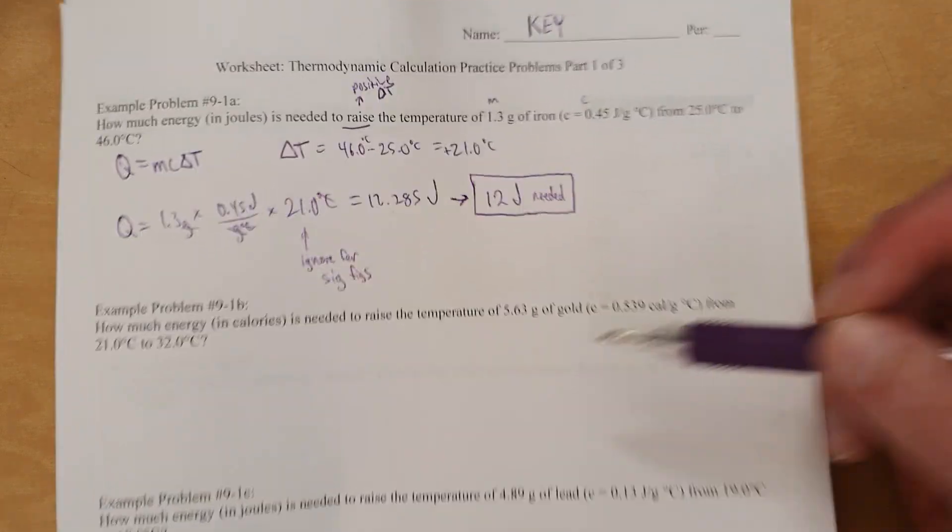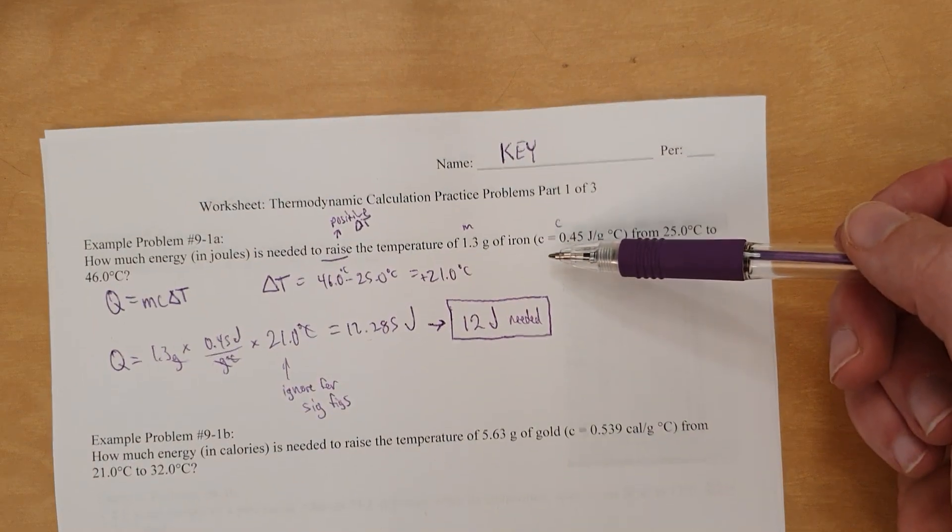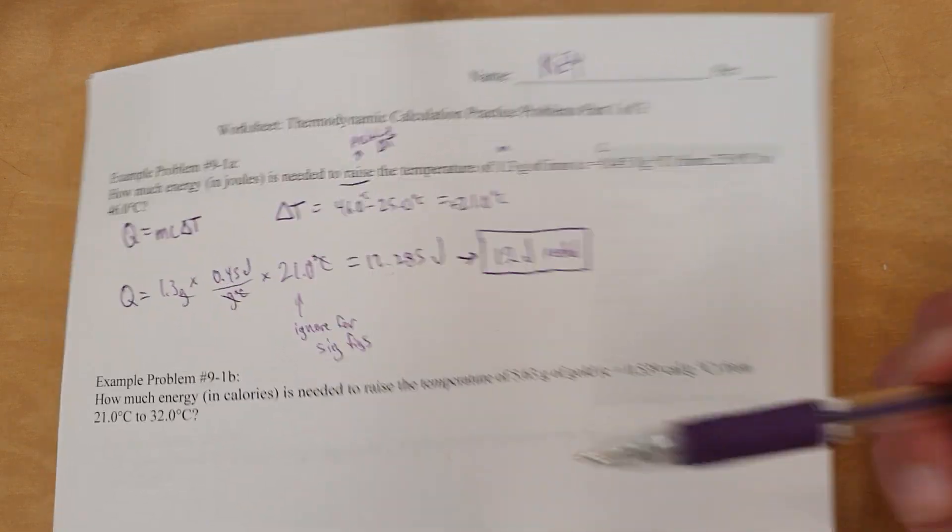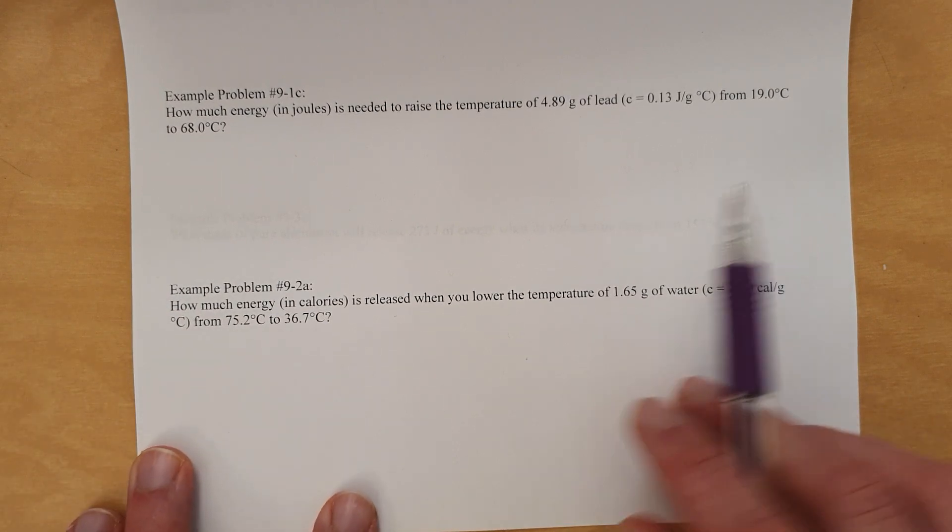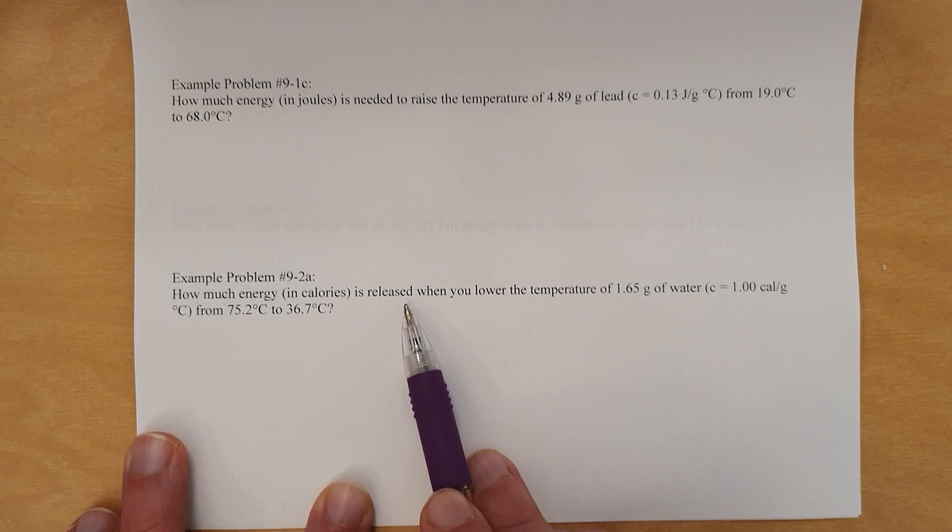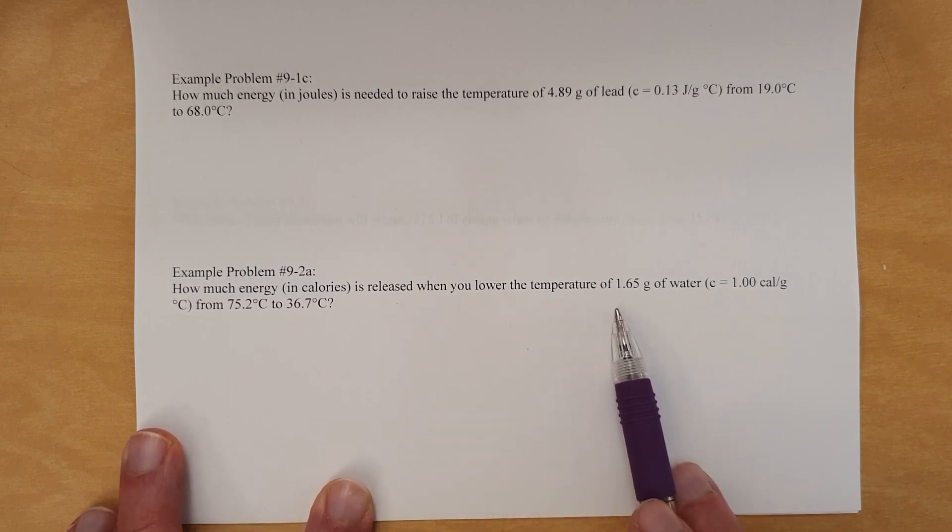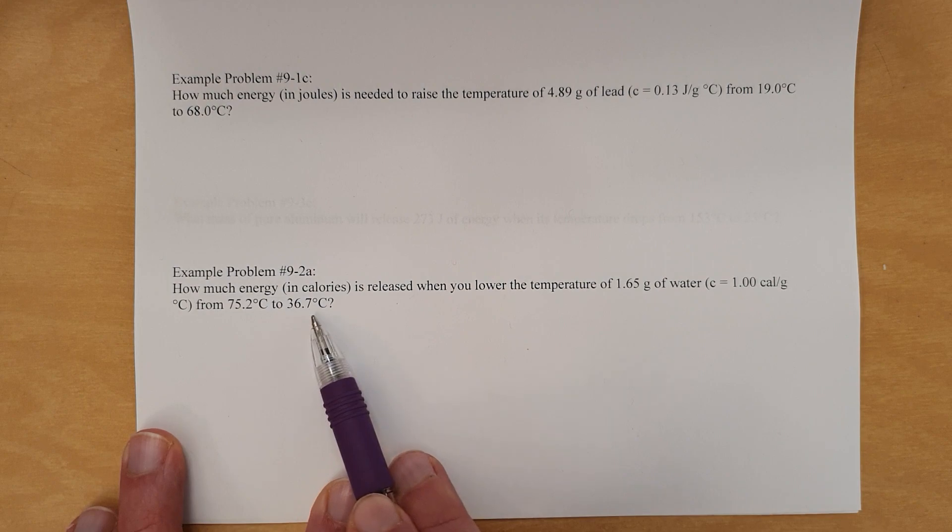And with that, when you look at these other questions, you're going to follow the same general technique as was done up here. But let's look at another one now. Now, example 92A, so you can get a different flavor for a different sort of question. How much energy in calories is released when you lower the temperature of 1.65 grams of water, and it gives you the specific capacity from that temperature to that temperature.